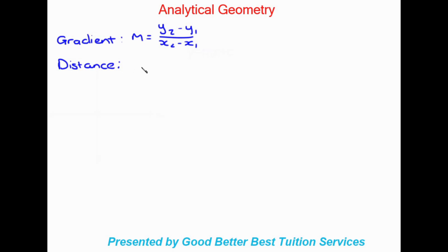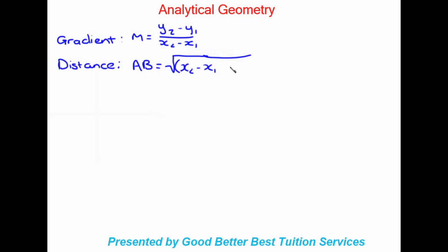For distance, let's say we're working out from point A to point B, so that line would be called line AB. The formula is a massive square root, and inside we're going to have a bracket that's x2 minus x1 squared, added to another bracket which is y2 minus y1 squared, and all of this falls underneath the square root sign.